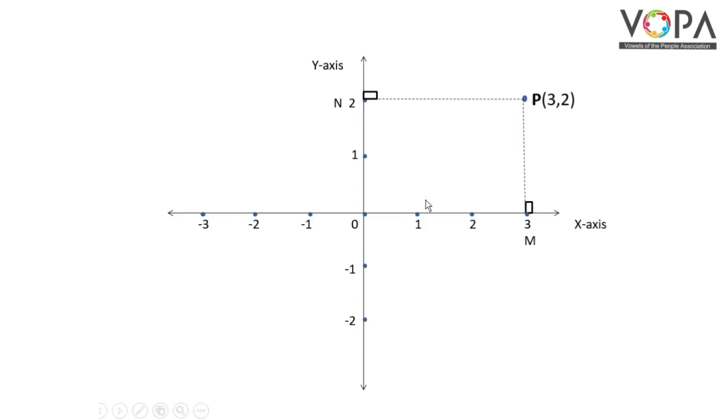Similarly, we can find the coordinates of point Q. Here, this is point Q. First, we draw QA perpendicular to X-axis and then draw QB perpendicular to Y-axis.